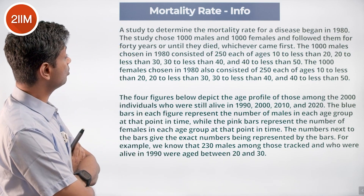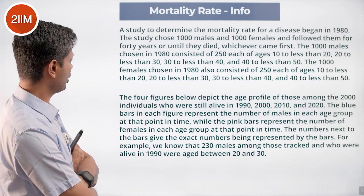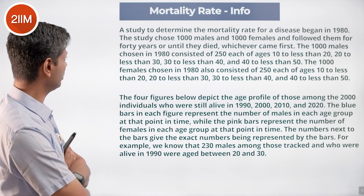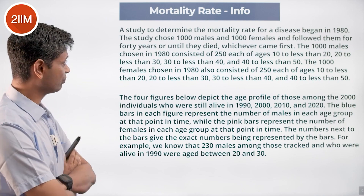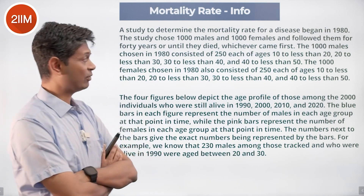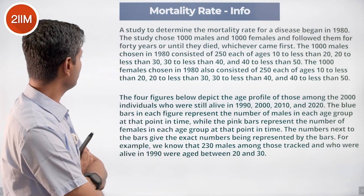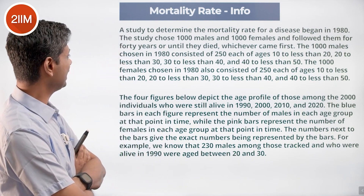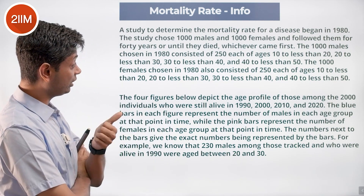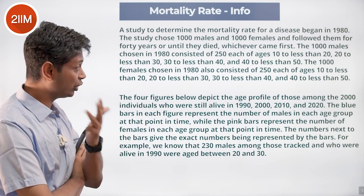A study to determine the mortality rate for a disease began in 1980. The study chose 1000 males and 1000 females and followed them for 40 years or until they died, whichever came first. The 1000 males chosen in 1980 consist of 250 each in the age groups 10 to 20, 20 to 30, 30 to 40, and 40 to 50.